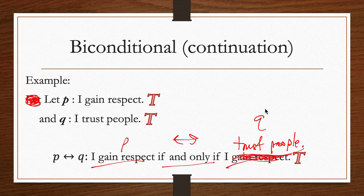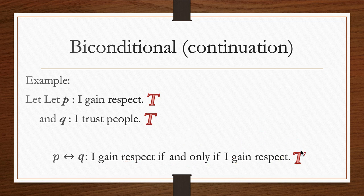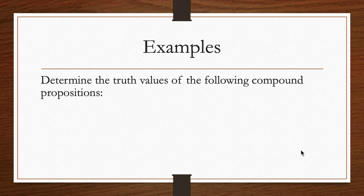Those are the truth values when we mix simple propositions and combine them with different logical operators. Now let's make use of truth tables to give us an overall point of view. We'll determine the truth values of compound propositions. Number one: not P or P.